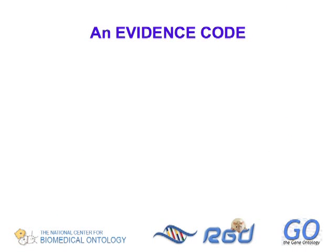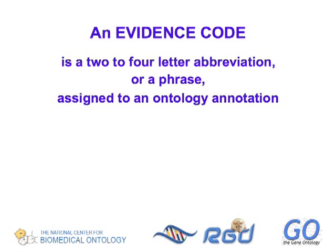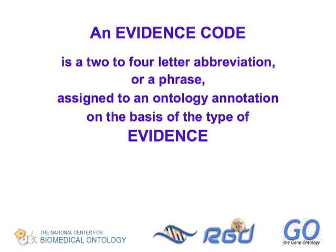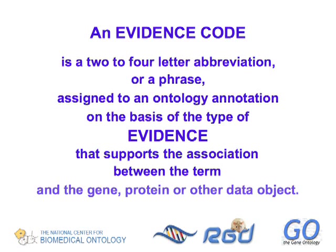An evidence code is a two- to four-letter abbreviation, or a phrase, which is assigned to an ontology annotation on the basis of the type of evidence that supports the association between the term and the gene, protein, or other data object.